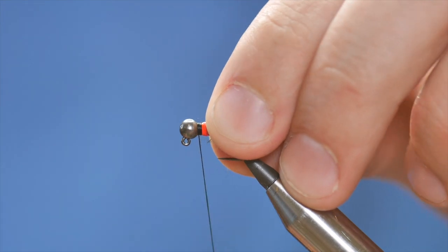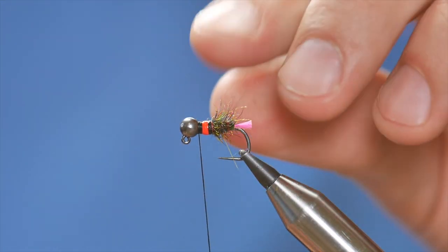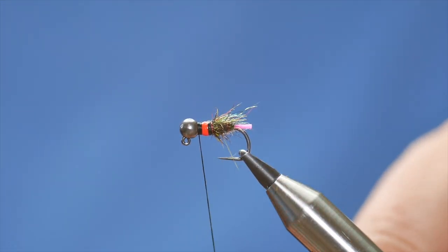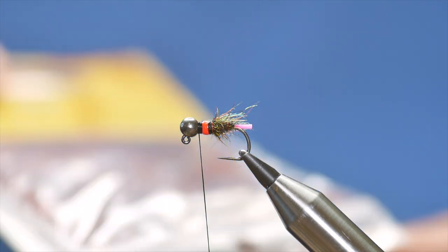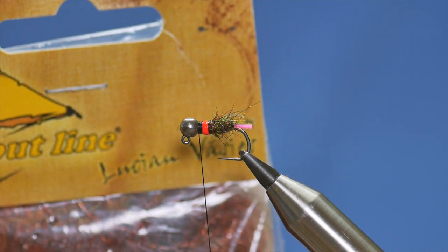Just going to add another couple of wraps. And then I'm going to flatten my thread out by twisting it anti-clockwise. And, I'm going to add a collar of dubbing. Now, you can use the same dubbing. I could use the Highland Peat again. Or, I could use a contrasting dubbing, which I'm going to use on this occasion.